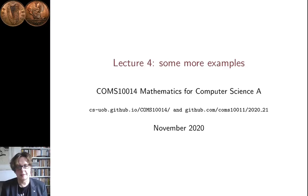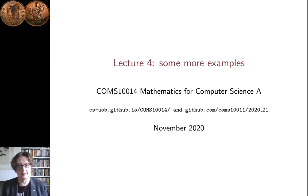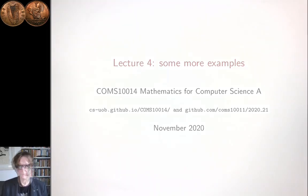Hi, I'm Conor Houghton and this is lecture 4 in the Probability and Combinatorics section of Mathematics for Computer Science A. This lecture gives a few more examples of calculating probabilities using combinatorial reasoning.